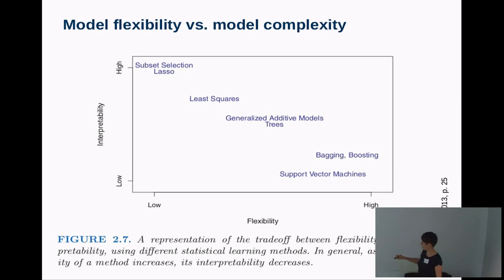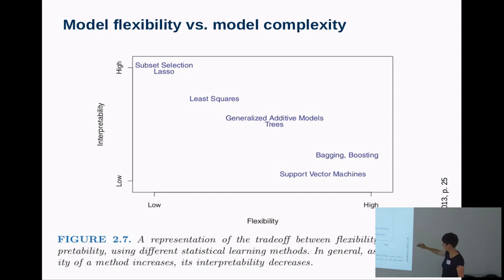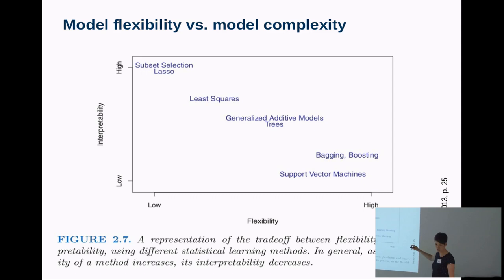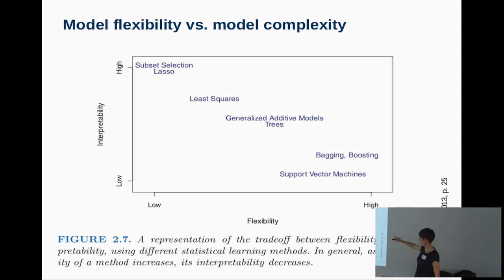Here I have a plot from the book of Garrett. You have interpretability of a model on one axis — low to high — and the flexibility or complexity of your model on the other. Lasso and subset selection of linear regression give very small models that are easy to interpret but tend to underfit. The more we go towards machine learning methods — support vector machines, bagging, boosting, random forest — the interpretability is usually dropping.